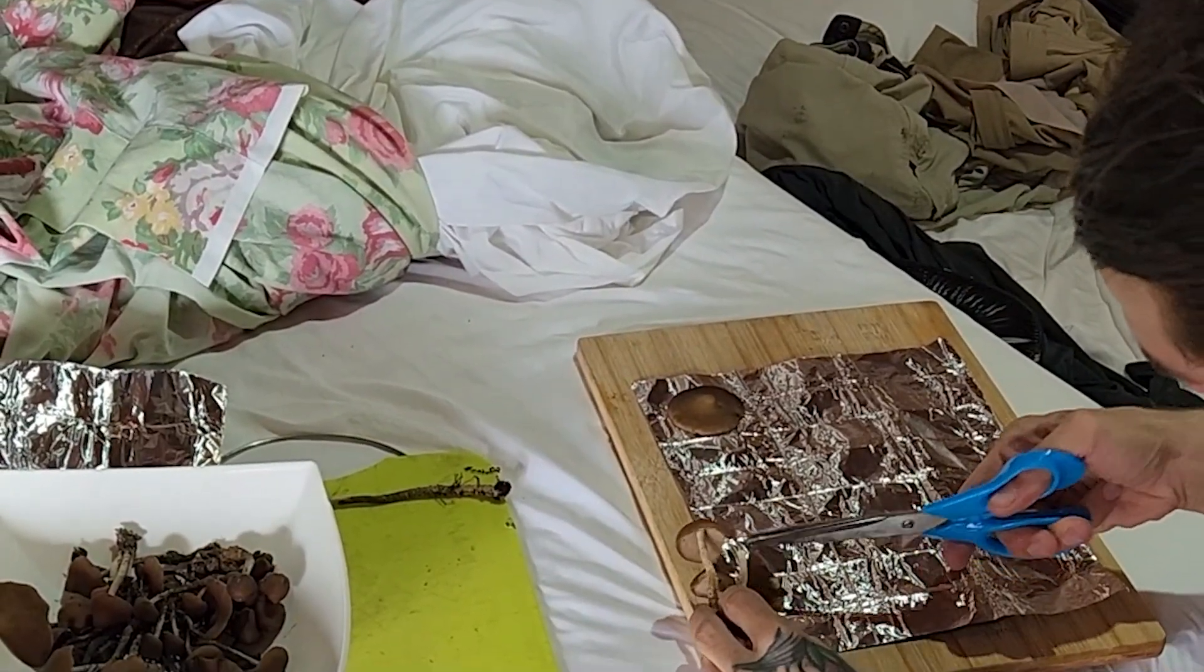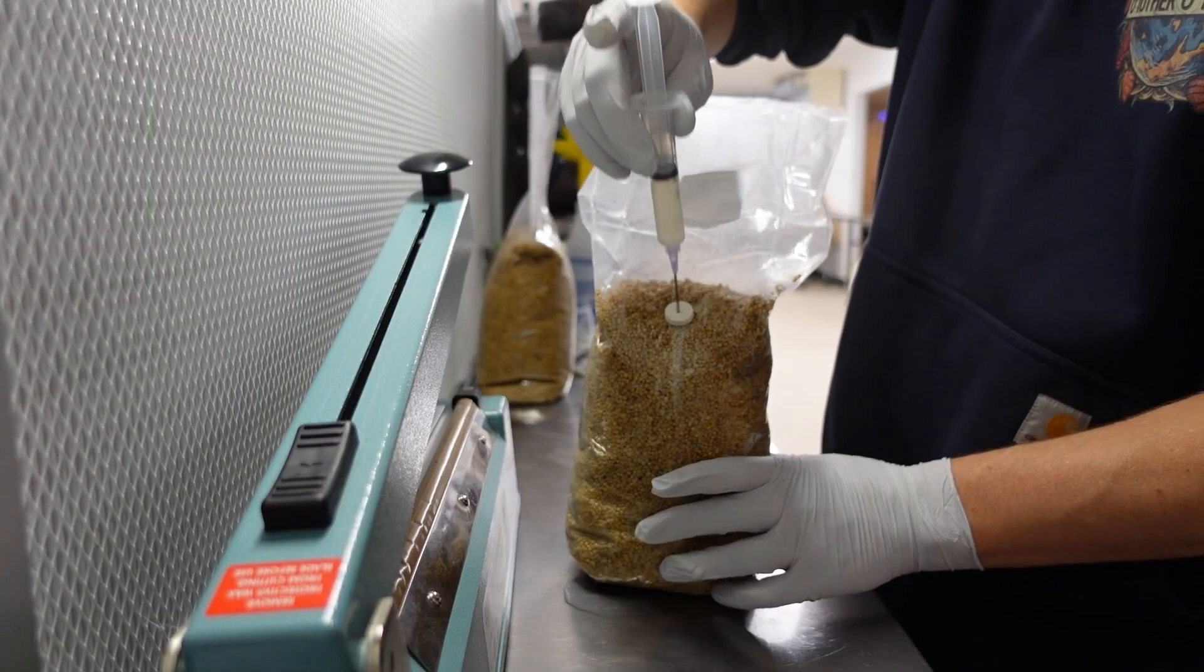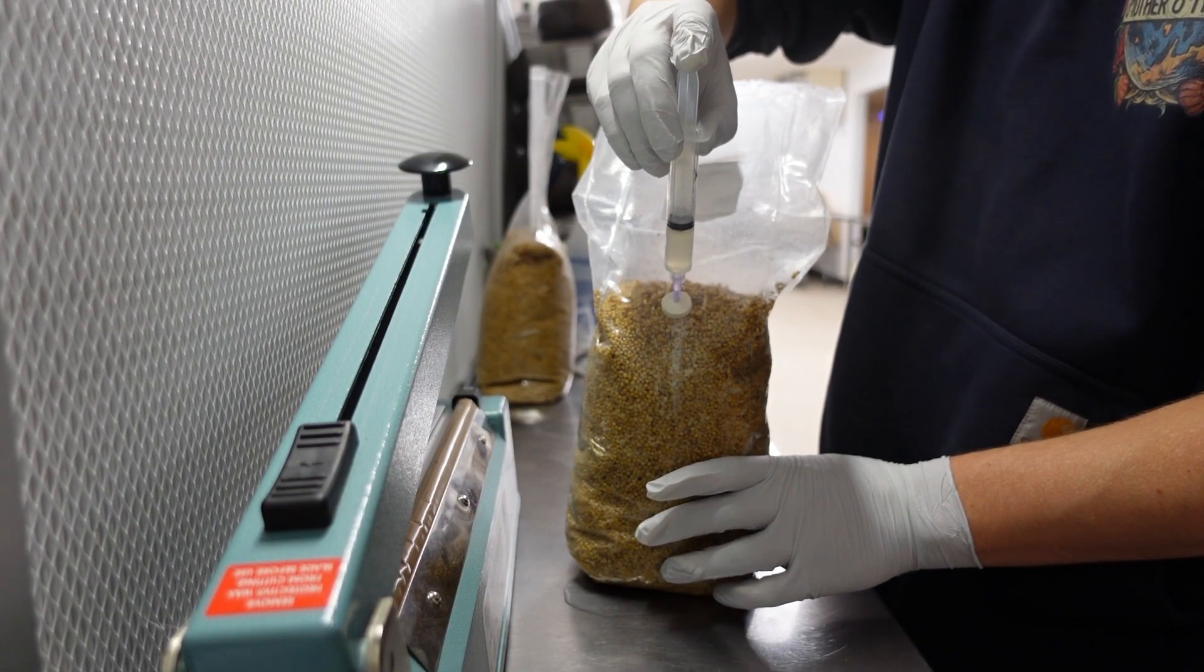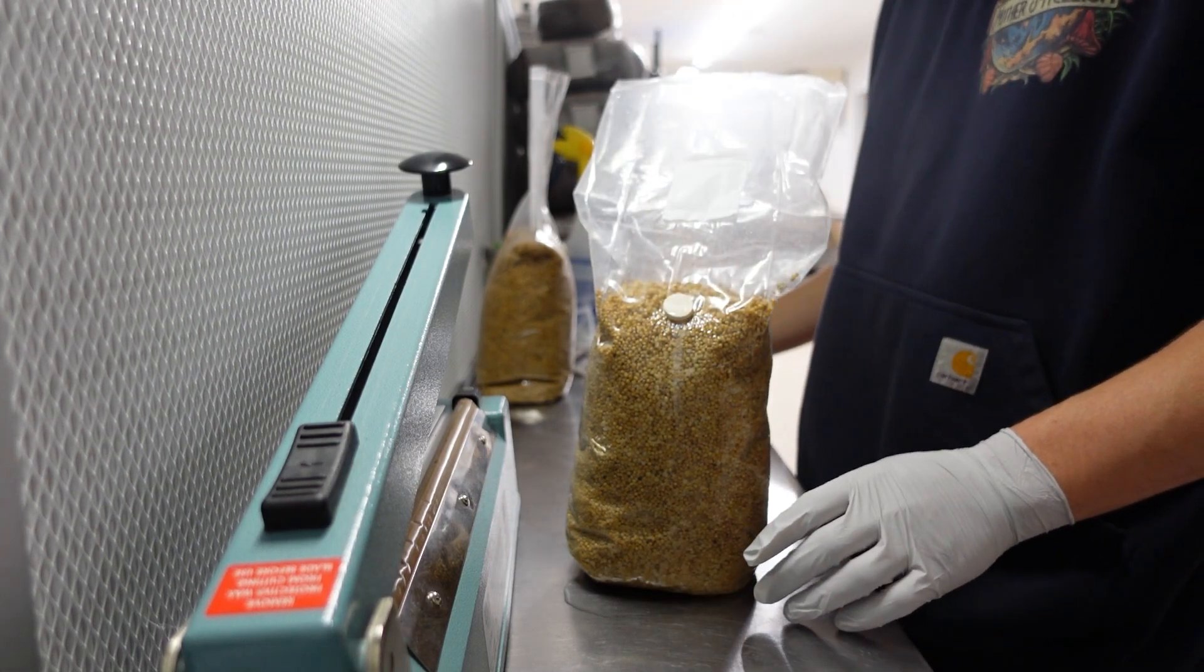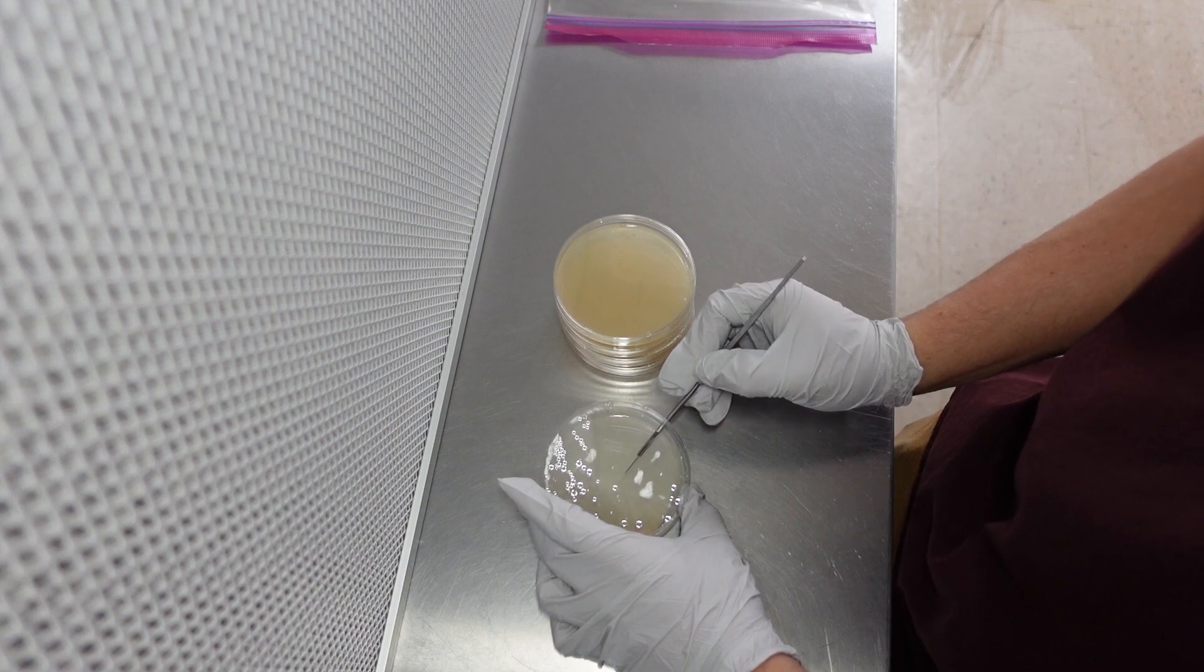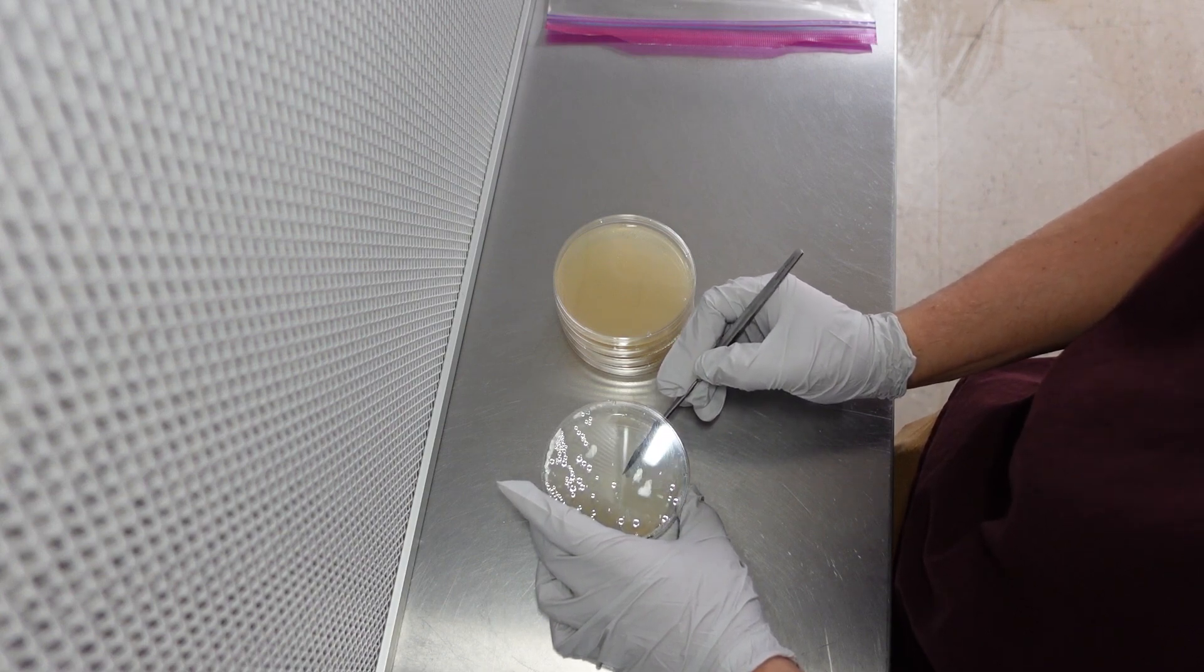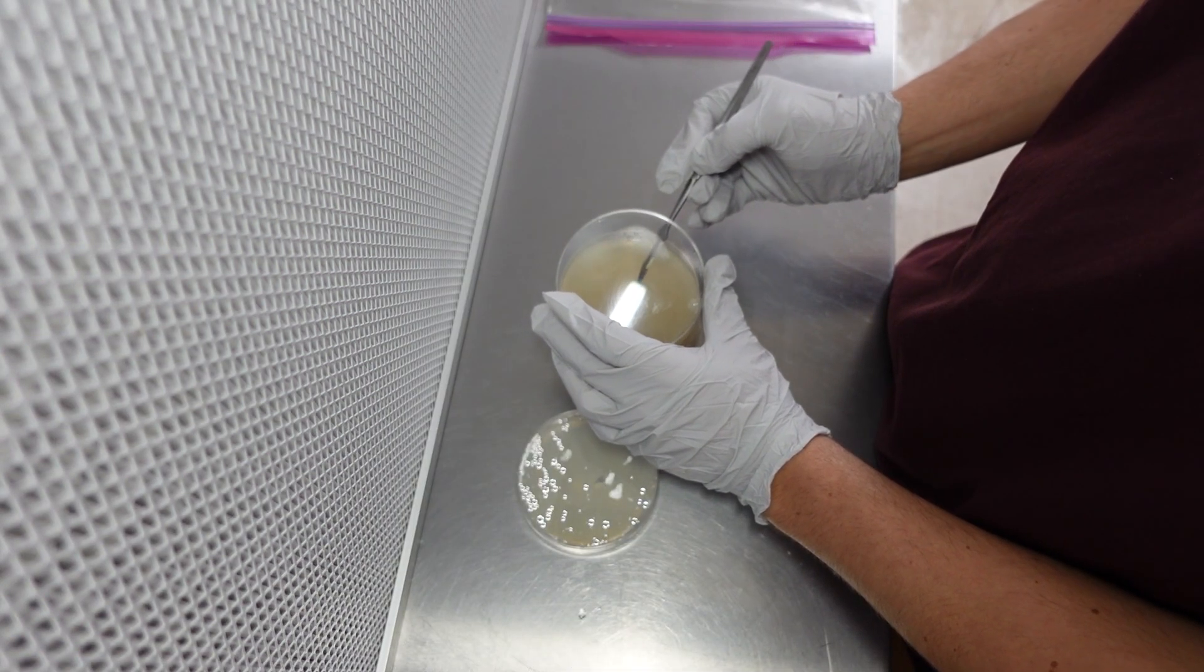If you have a spore syringe, you can skip the next step and inoculate the spore solution straight into sterilized grain. This tends to work well if the spore syringe is high quality and free of contamination, but it is always a good idea to plate out the spores first if you have the time and supplies available. By plating the spores before inoculating grain, you can isolate subcultures and ensure they are free of contamination.